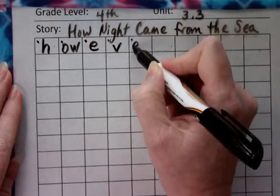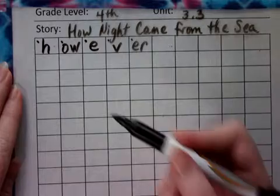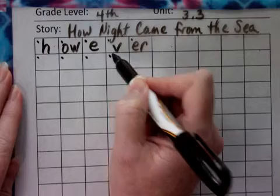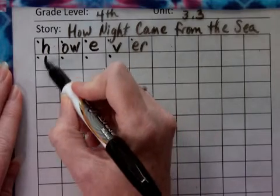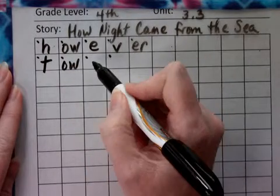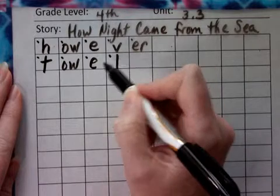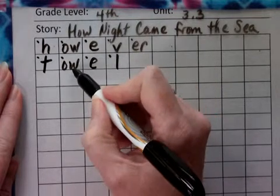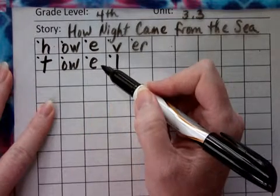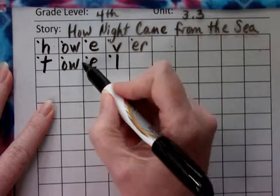Our R-controlled vowel goes in one box: however. The next word is 'towel.' Sounded out: T-OW-L. The first sound is T, then OW — that's O-W — then UL. This says 'UL' because this is considered a vowel. Towel. If we clap it out, towel is a two-syllable word; the syllable break is right here.